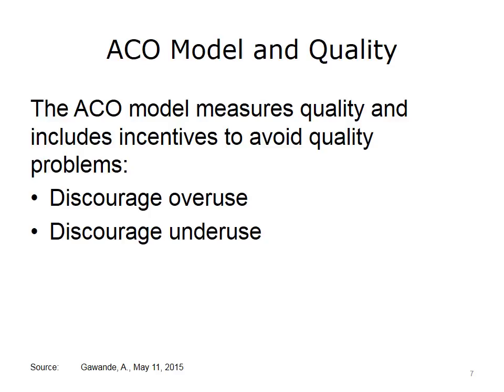For example, in the United States, rates of thyroid cancer detection and removal have increased by three times in the past 20 years. Despite that dramatic increase in detection and treatment, the thyroid cancer death rate has not decreased. The number of patients experiencing permanent complications from thyroid surgery, however, has dramatically increased. By creating financial incentives to avoid overuse, the ACO model can help address this issue. Patients as consumers of health care also can be encouraged to avoid overuse and choose high-value services. We'll look at the role of consumers more in the next lecture.